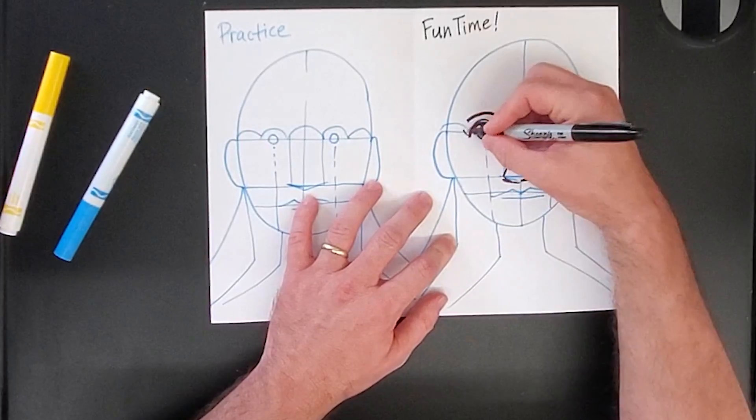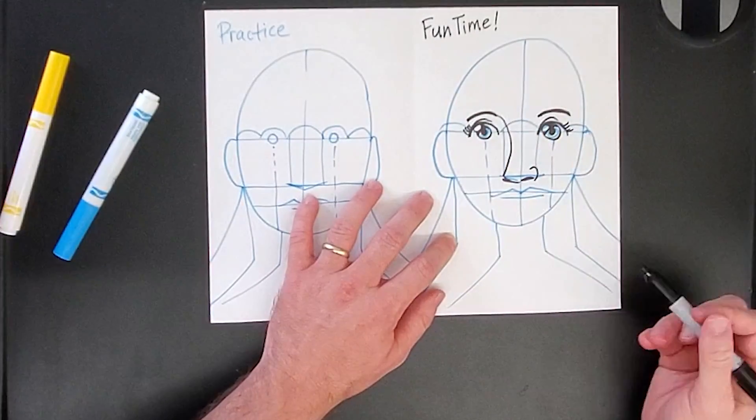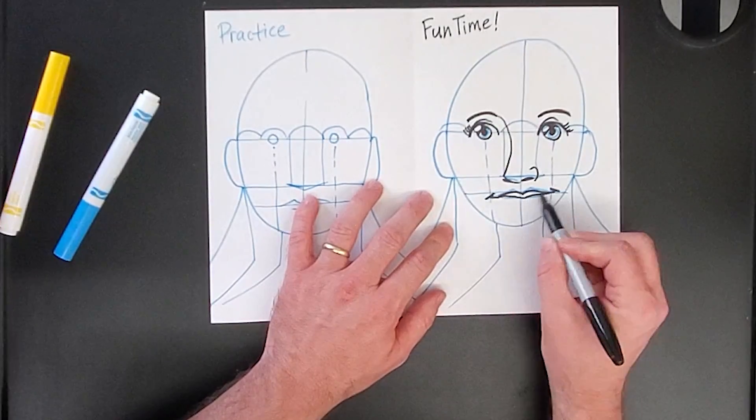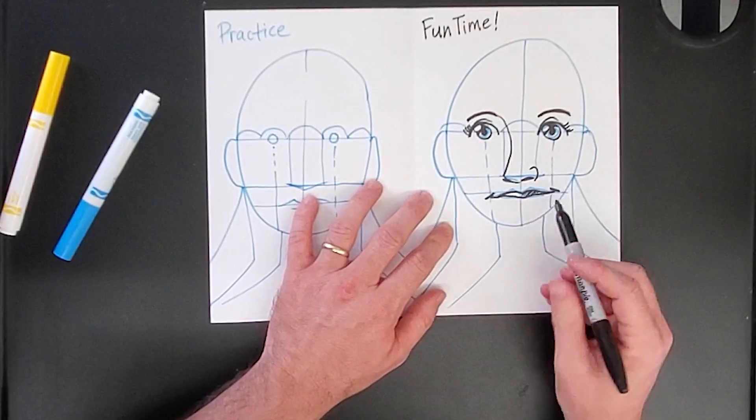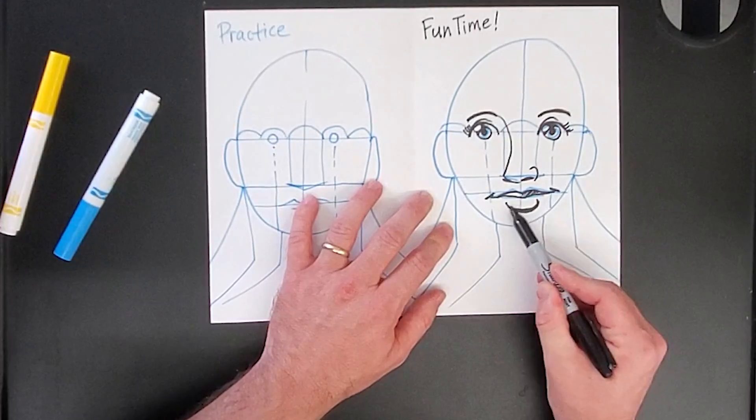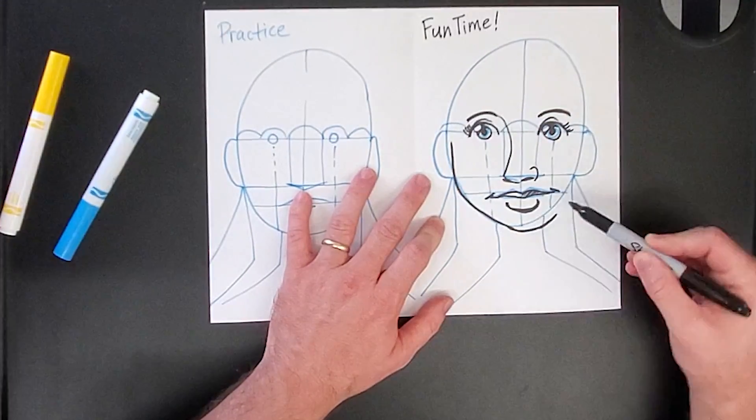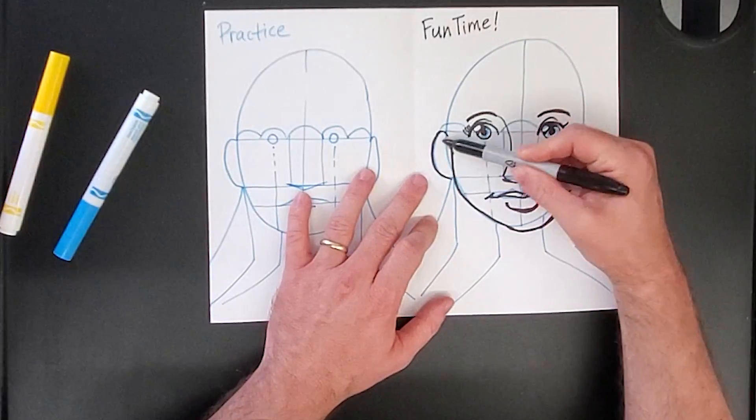I'll make this a lady, I'll add eyelashes, kind of give her a smirk. Give her lips, give her a round jawline, add ears, add hair, maybe give them some bangs.